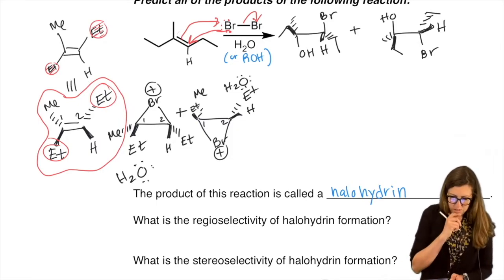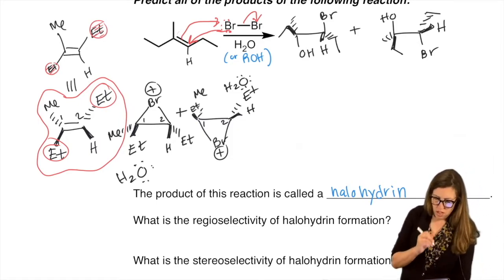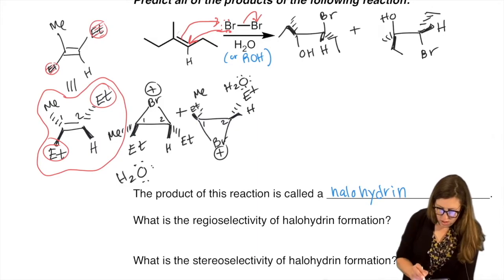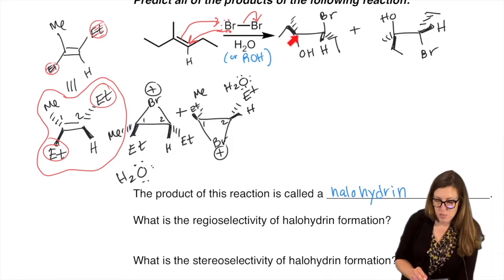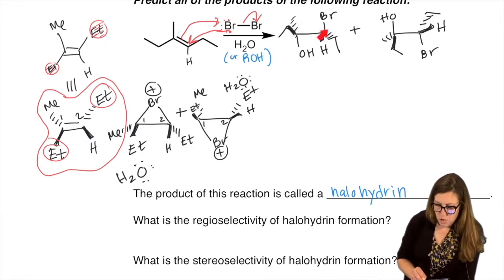Now note what happens. Note that the nucleophile still followed Markovnikov's. The nucleophile ended up on the more substituted - excuse me, carbon. The OH ended up on the more substituted carbon. The bromine that got attacked is on the less substituted carbon, so this time it's not an H going to a carbon with more H's, it's a bromine.